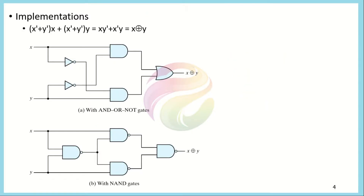We can represent the exclusive OR operation in the form of the AND-OR representation discussed in the last lecture. The main equation of the exclusive OR expressed using AND and OR gates is quite straightforward: we take the complement of x and the complement of y, feed them into two AND gates, and then OR the results together.